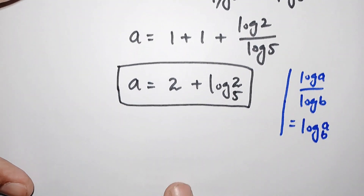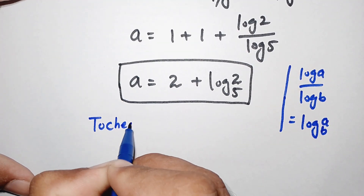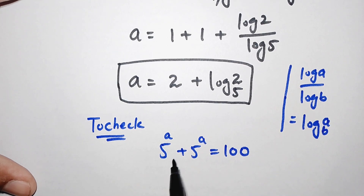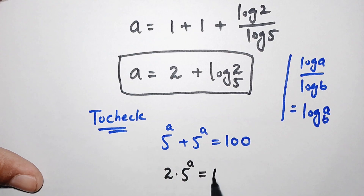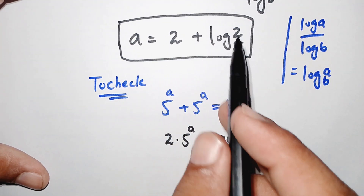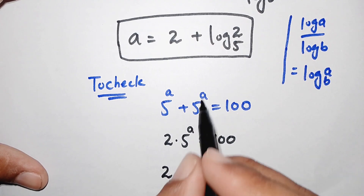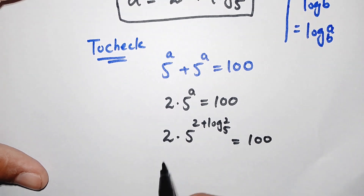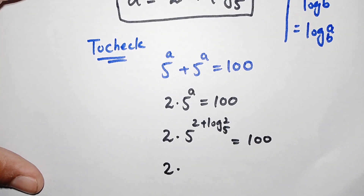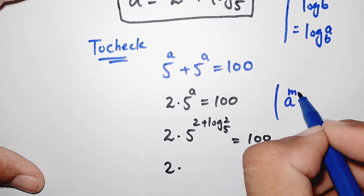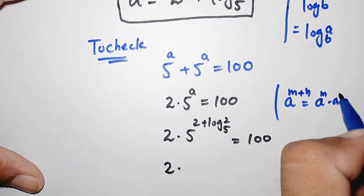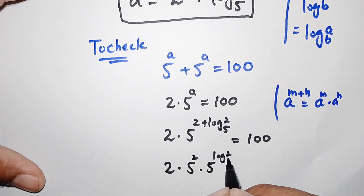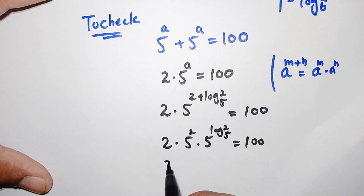Now we check whether this answer is correct. The original question is 5 to the power of a plus 5 to the power of a equals 100. We substitute the value a equals 2 plus log of 2 base 5. Applying the exponent rule, this becomes 2 times 5 to the power of 2 times 5 to the power of log of 2 with base 5, which should equal 100.